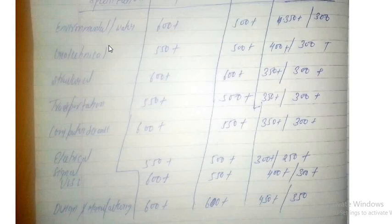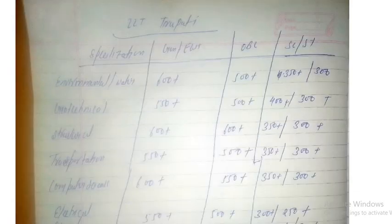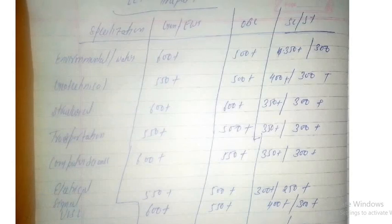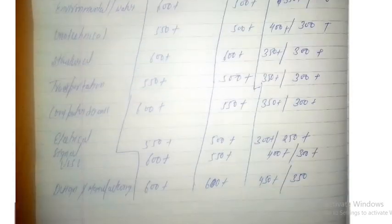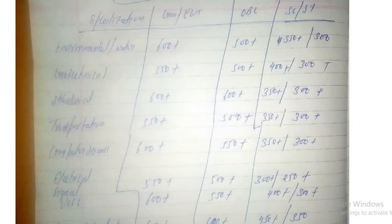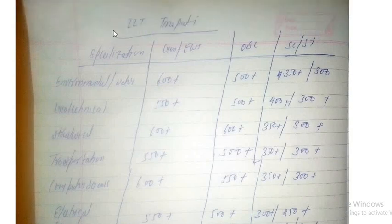If you are getting a gate score of 400 plus, why would you apply for Environmental or other branches where you won't get in? Don't apply below the threshold. You can take a risk, but as per my experience covering all counseling updates last year regarding all cutoffs — I am sharing all my experience with you. It is up to you what you decide. Thanks, keep watching, please subscribe to my YouTube channel for all updates regarding admissions, MS, and PhD.